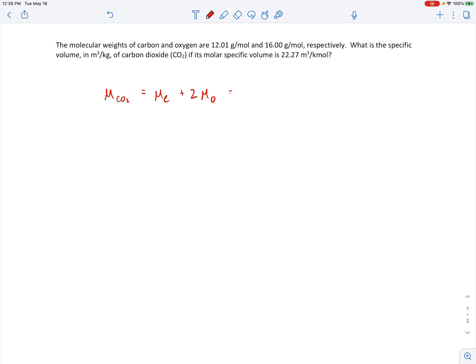So we're given that the molecular weight of carbon is 12.01 grams per mole. Then we have two oxygens, so that's 16 grams per mole. And then when you work out the numbers for that, that comes out to be 44.01 grams per mole.